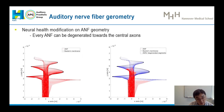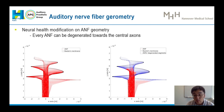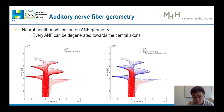Using the auditory nerve fiber geometry, we can easily modify the nerve health. For example, on the left we have fully healthy auditory nerve fibers, but on the right side we can control the auditory nerve fiber geometry to lose all nodes in the peripheral process of the auditory nerve fibers, representing a degenerated condition.